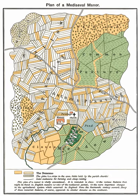A manor in English law is an estate in land to which is incident the right to hold a court termed court baron, that is to say a manorial court. The proper unit of tenure under the feudal system is the fee or fief, on which the manor became established through the process of time, akin to the modern establishment of a business upon a freehold site. The manor is nevertheless often described as the basic feudal unit of tenure and is historically connected with the territorial divisions of the march, county, hundred, parish and township.